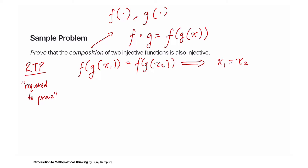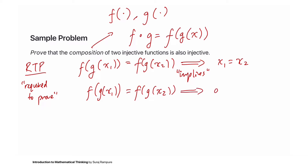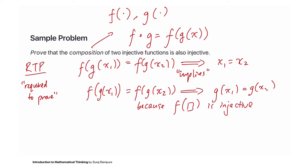We haven't formally covered how the implication symbol works, but let's use the properties of injective functions. Since f is injective, f(g(x1)) = f(g(x2)) means that g(x1) = g(x2) — because f is injective, two equal outputs must come from equal inputs. We can treat g(x1) and g(x2) as just two numbers; since f is injective, those two numbers must be equal.